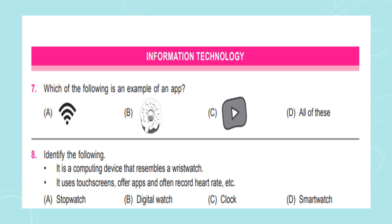The next section is Information Technology. Question number 7: Which of the following is an example of an app? Option A: A picture of a Wi-Fi symbol, Option B: A donut, Option C: A YouTube icon, Option D: All of these. Question number 8: Identify the following — it is a computing device that resembles a wristwatch. It uses touchscreens, offers apps, and often records heart rate, etc. Option A: Stopwatch, Option B: Digital watch, Option C: Clock, Option D: Smartwatch.